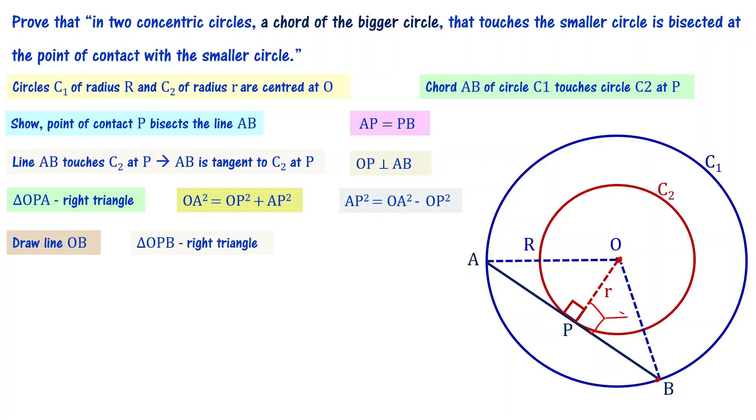For a right angle triangle, we apply Pythagoras theorem. Like we did before, OB square is equal to OP square plus PB square. We rearrange this so PB square equals OB square minus OP square. OB is capital R, OP is small r, so we substitute that. PB square equals capital R square minus small r square.